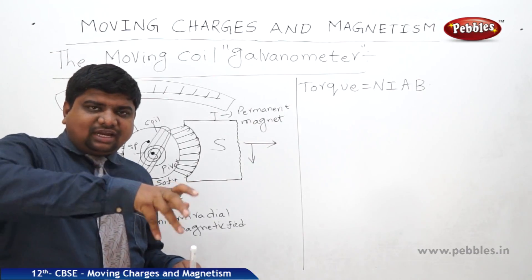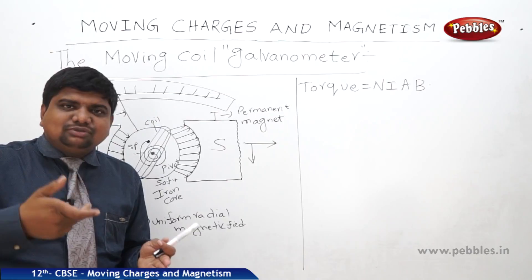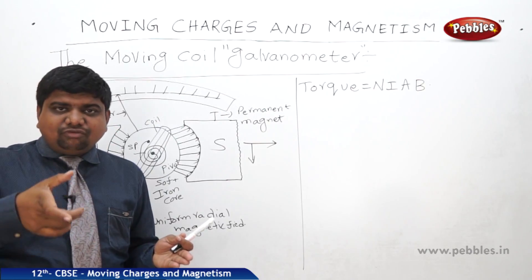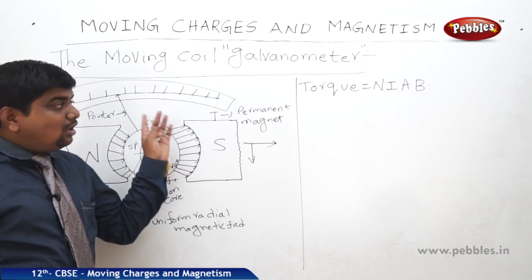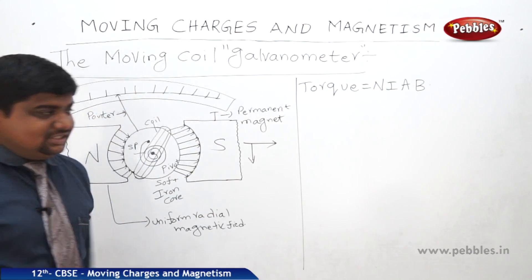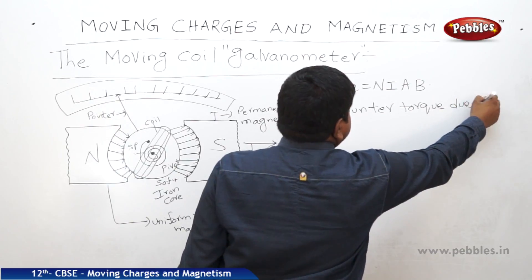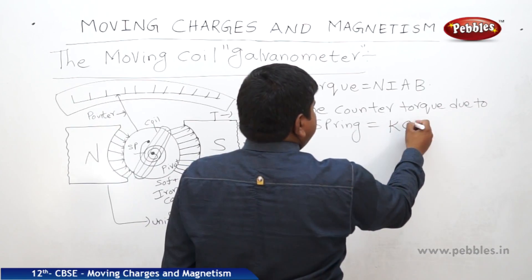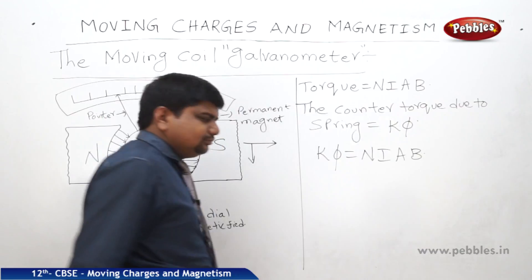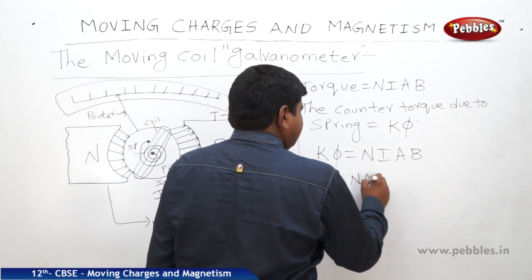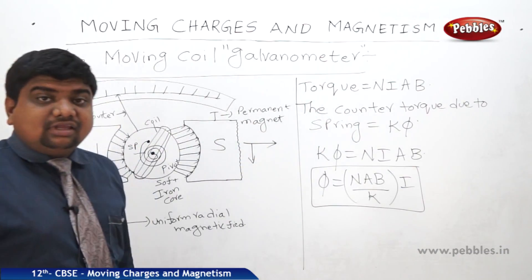When the coil rotates right or left with respect to the applied field, the spring compresses, but it tries to expand and return to its original state. As it returns, a counter torque develops within the spring to oppose the external force. This counter torque is related to the spring constant and rotational constant. The counter torque due to the spring equals Kφ. Setting Kφ equal to NIAB, we get φ equals NIAB/K. The quantity NIAB/K is called the galvanometer constant.